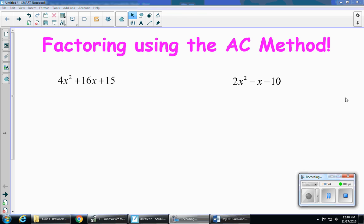And since I have a number in front, that 4 is the coefficient in front of the x squared, I need to use the AC method. So that means I have to start by multiplying 4 and 15. 4 times 15 gives me 60, so I'm going to list out my factors of 60 so I have them.